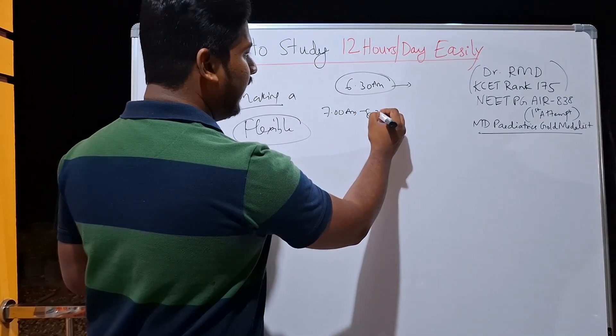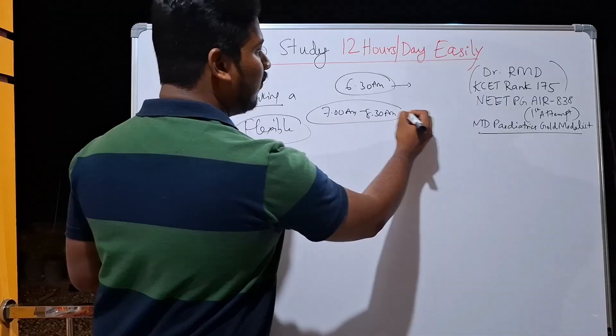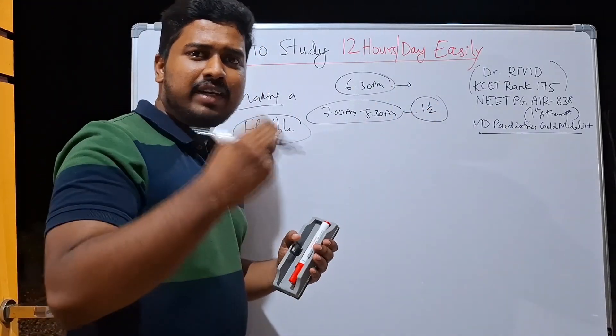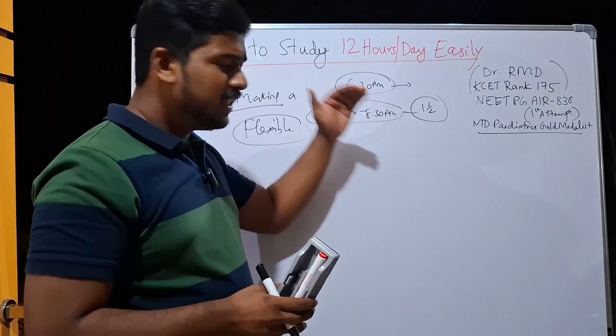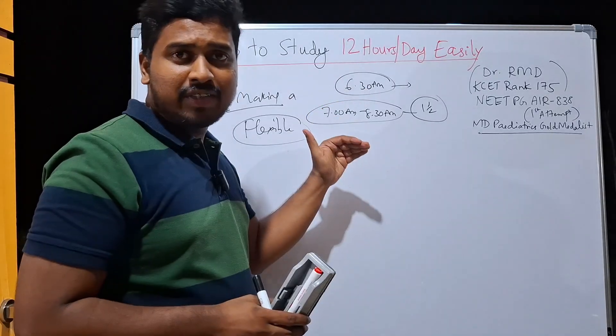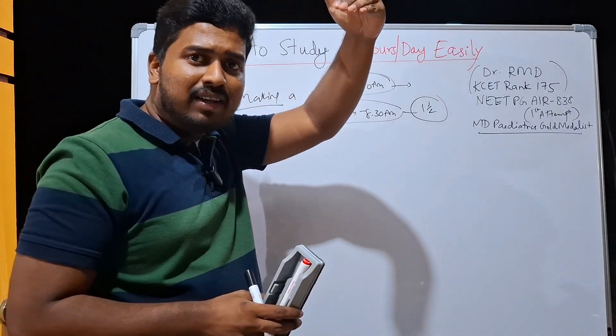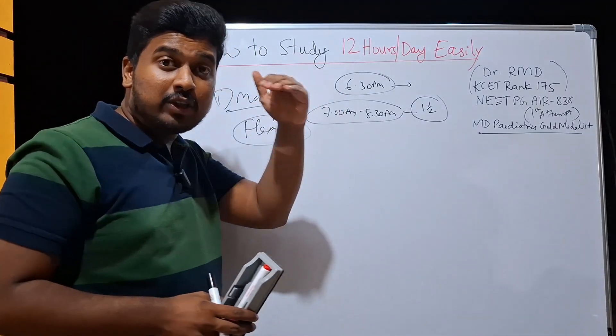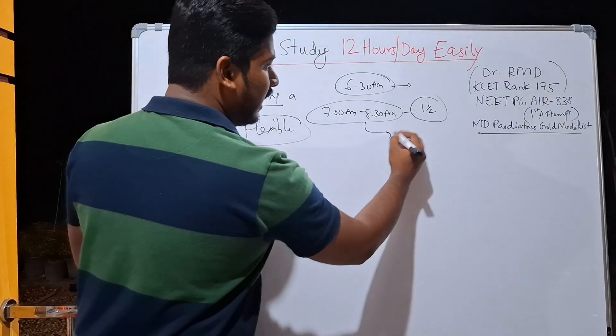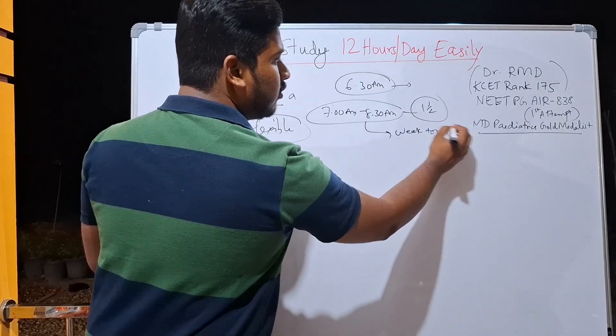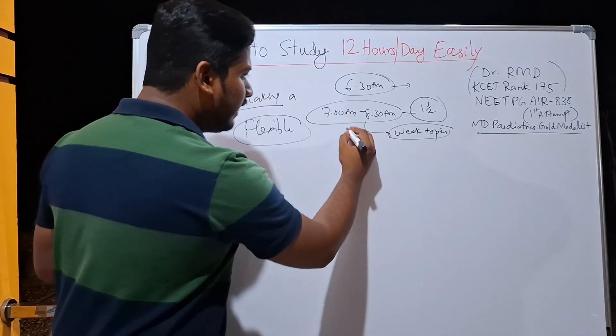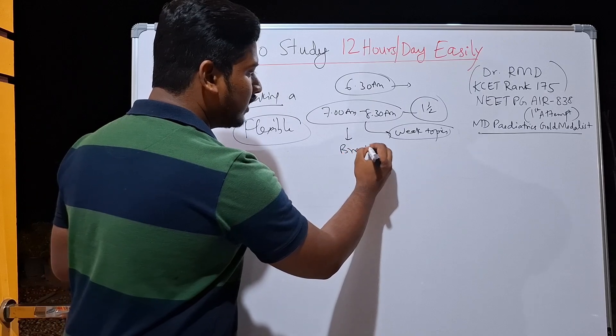So 7 a.m. till 8:30 a.m., this 1.5 hour is going to be very, very important. That is because here you are fresh. Your hormones are fresh. Your dopamine is at the upper level. So whatever you study in this hour should be those topics which you are weak at. So this is for weak topics, so that you can fully concentrate on these topics. Then give a break for your breakfast, 45 minutes.